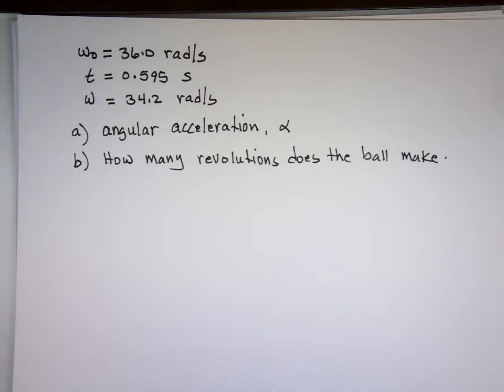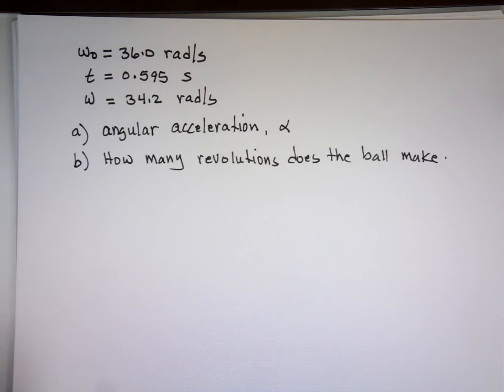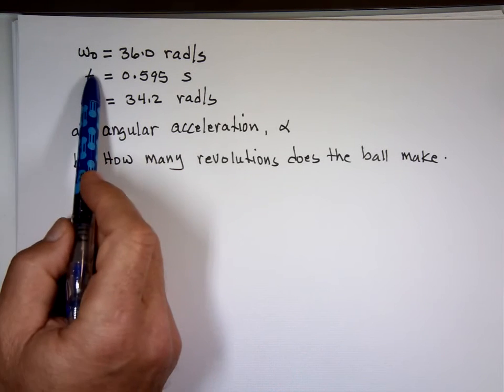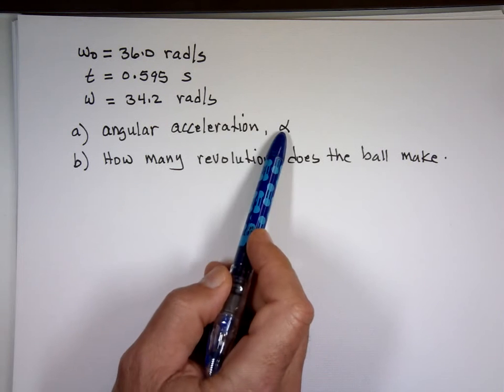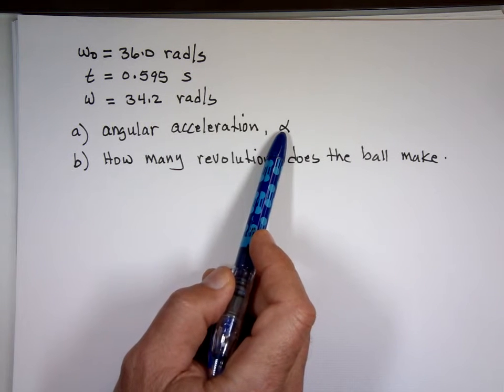Now, before we even start doing it, do you think the acceleration will be positive or negative? Negative. Why? Because we're slowing down. So let's look at part A. We know w 0, t, w, and alpha. Is there an equation that has these four things in it?